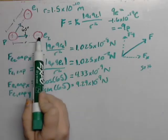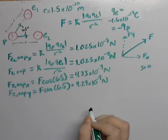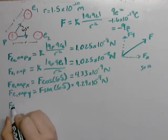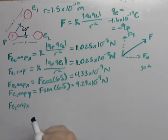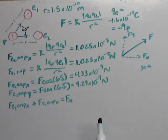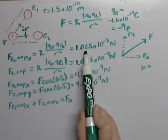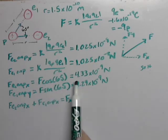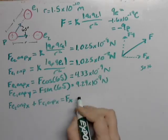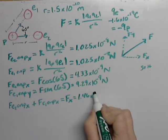Now you have component wise for this vector and component wise for this vector. In order to find the net force vector, you're going to add components first. F e2 on px plus f e1 on px is going to equal f of x, which means you're going to be taking this value, 1.025 times 10 to the negative eighth, plus this value, 4.33 times 10 to the negative ninth. And you're going to get 1.46 times 10 to the negative eighth.